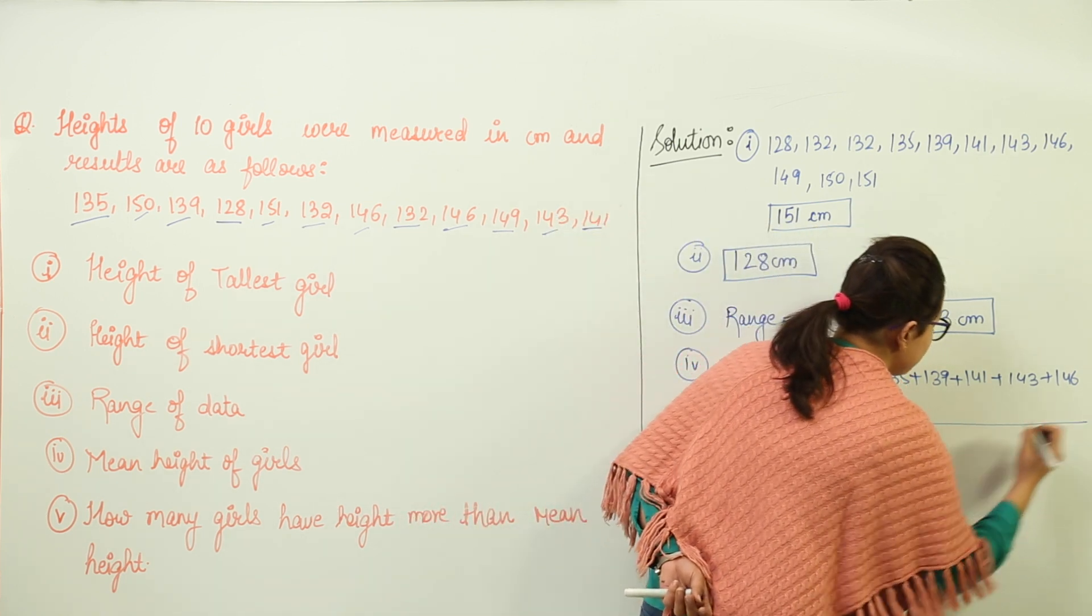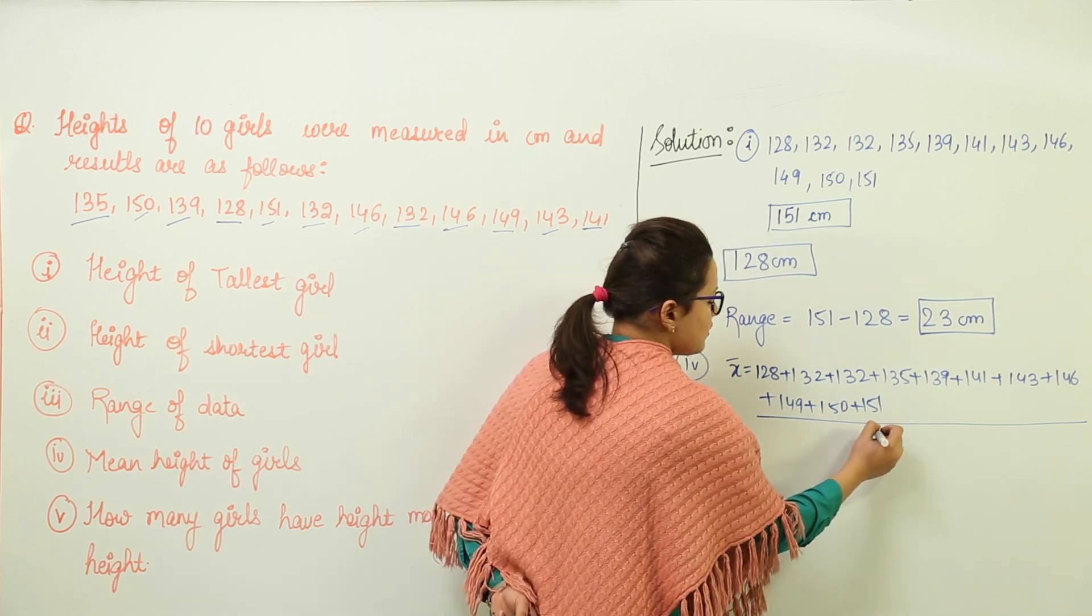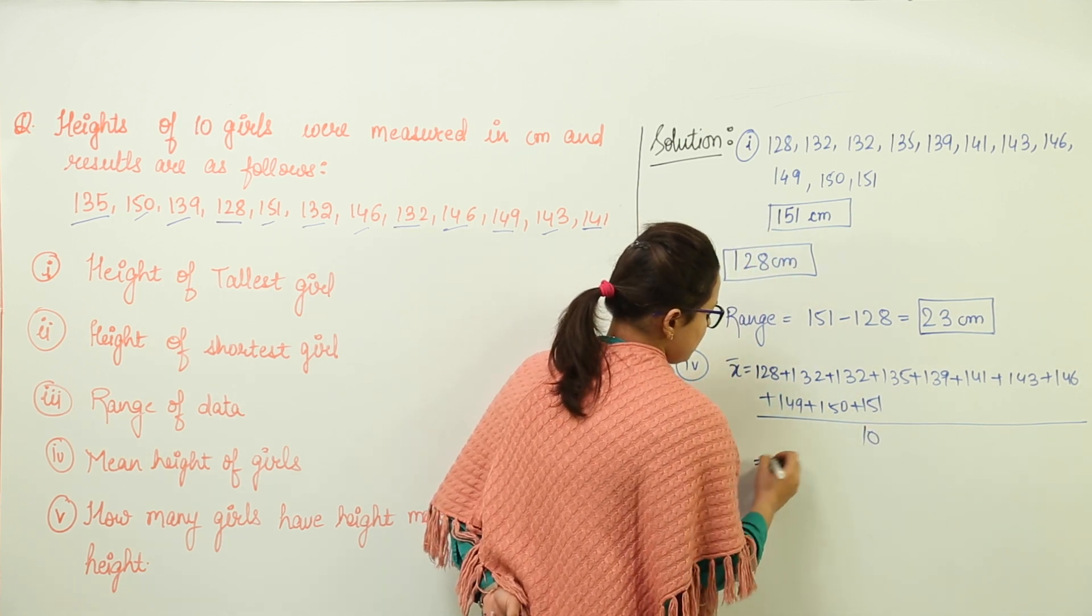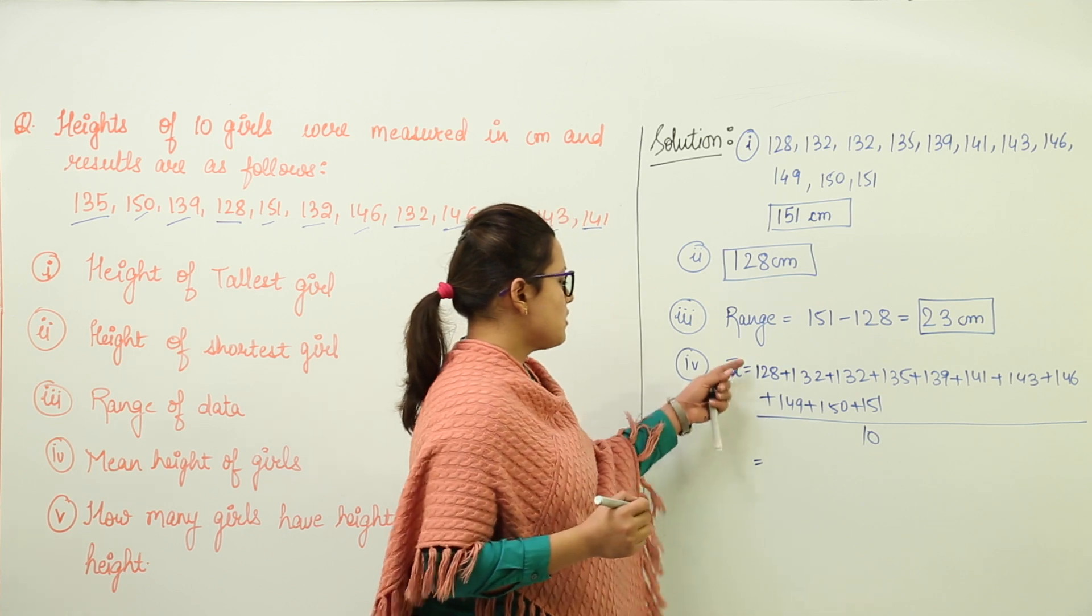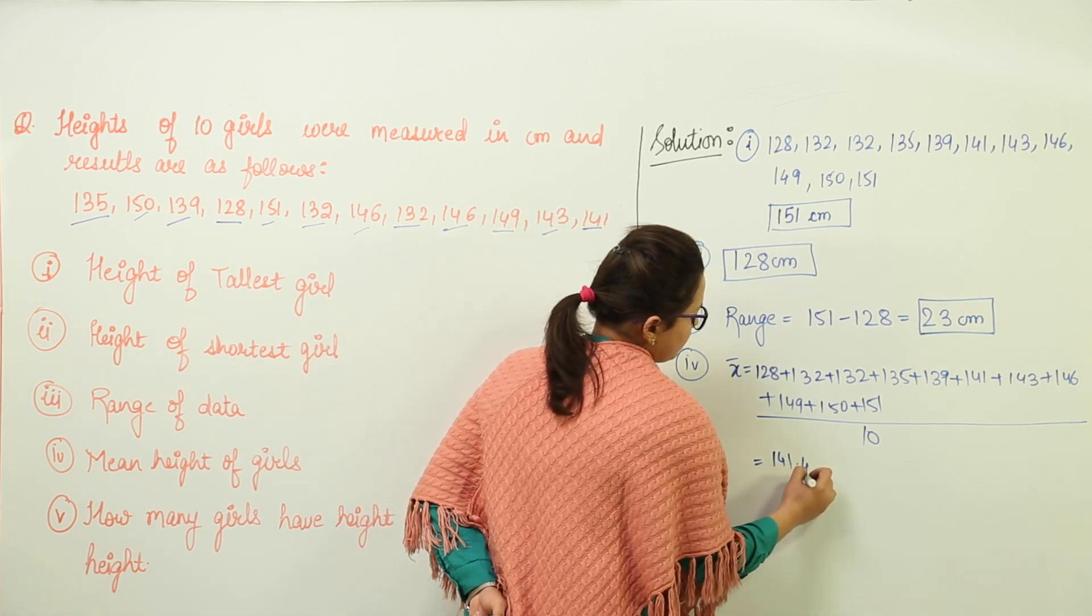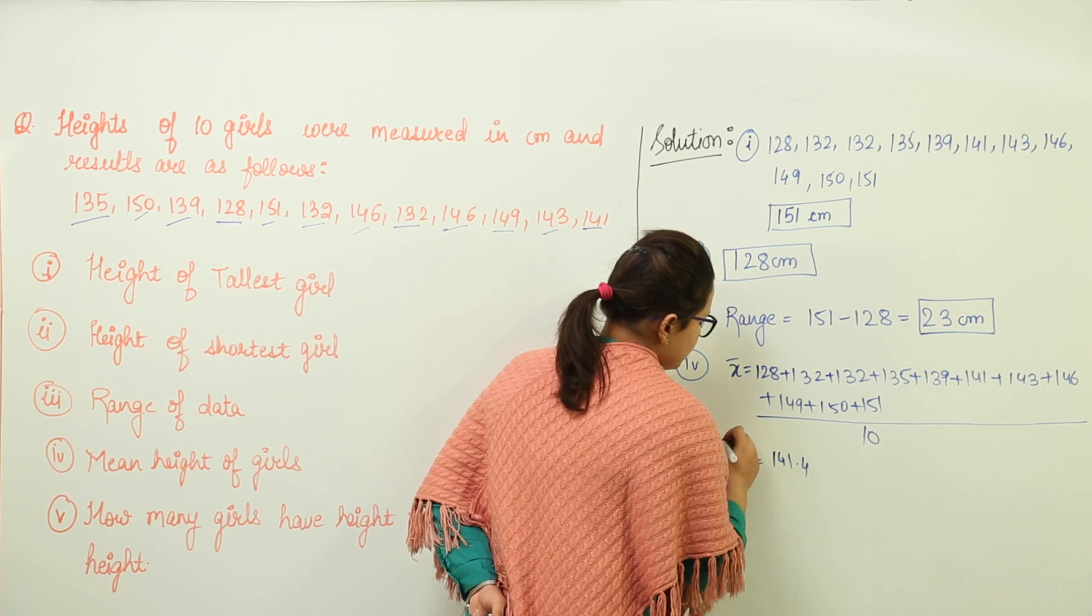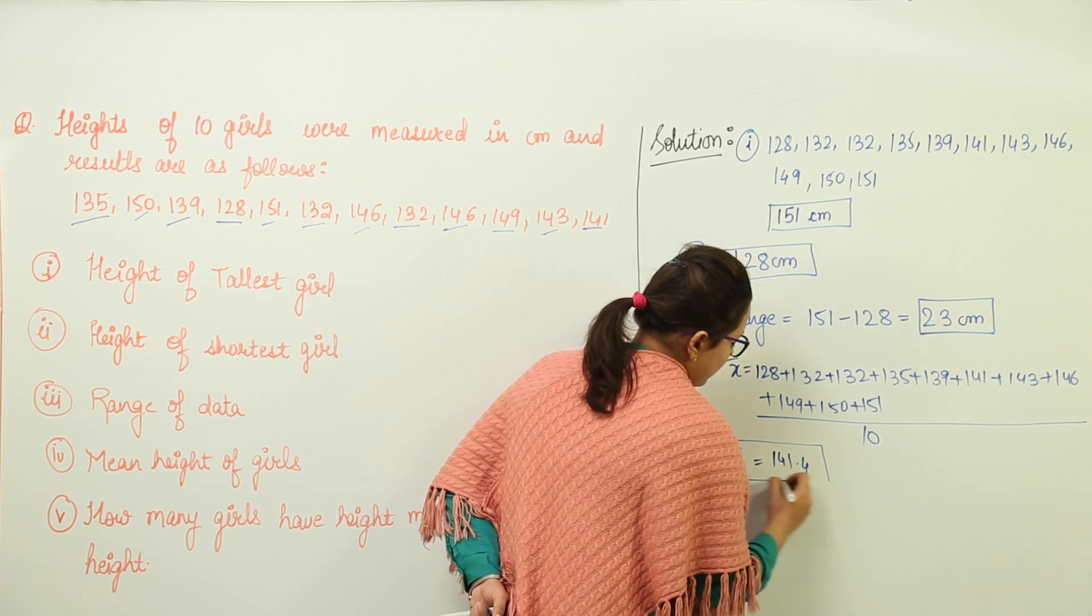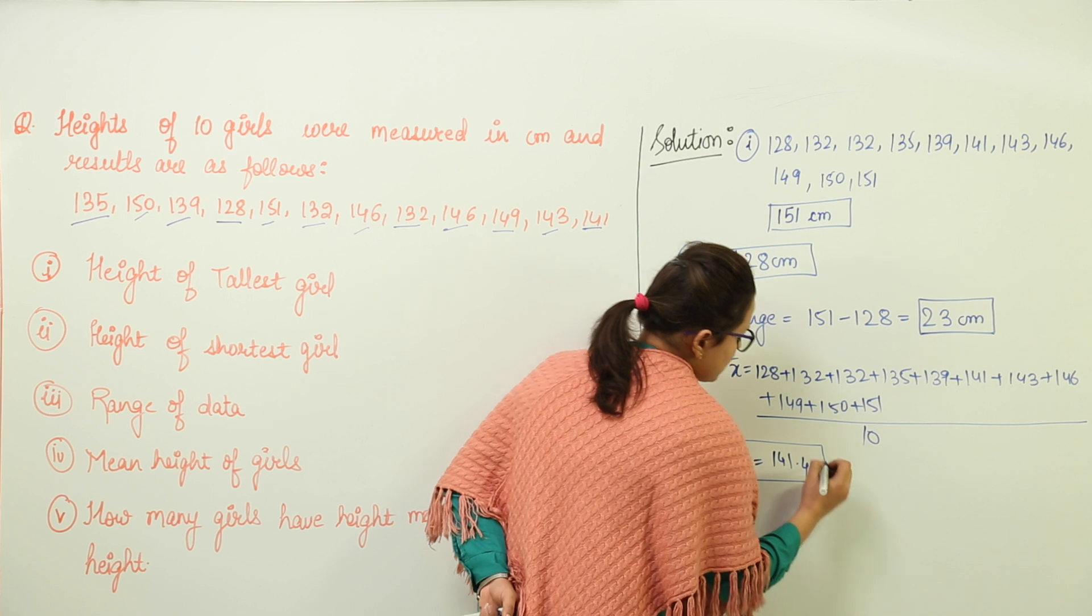Whole divided by number of observations. How many observations were there? 10. So we will get, on solving all this, 141.4. So the mean of the data comes out to be 141.4 centimeters.